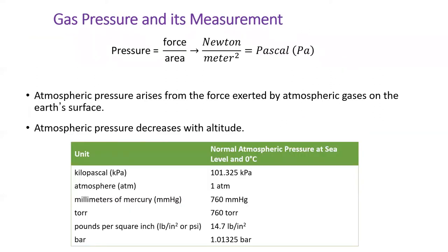We have many units to measure pressure. The official SI unit for pressure is the Pascal, but Pascals are so tiny that kilopascals are more common. However, the most common unit to measure pressure is the atmosphere, abbreviated ATM. One atmosphere is the amount of atmospheric pressure encountered on Earth at sea level. On an exam, you will be given a conversion table, and you can convert from one unit of pressure to another via a one-step dimensional analysis.